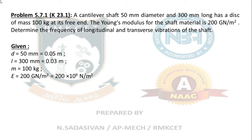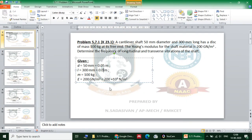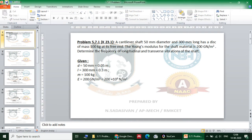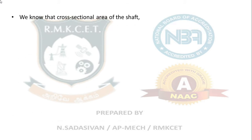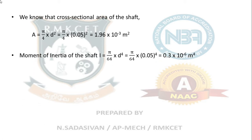Given data: diameter of the shaft is 50 mm, length is 300 mm (0.3 m), mass is 100 kg, and Young's modulus is 200 into 10 power 9 newton per meter square. The cross-sectional area is π/4 × d² = π/4 × 0.05², which gives 1.96 × 10⁻³ m². The moment of inertia for a solid circular shaft is π/64 × d⁴ = π/64 × 0.05⁴, which comes to 0.3 × 10⁻⁶ m⁴.